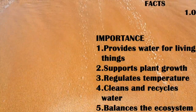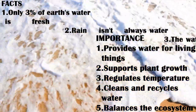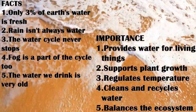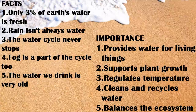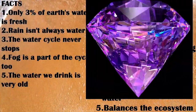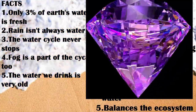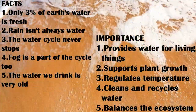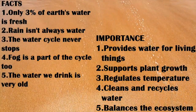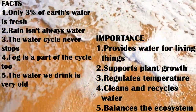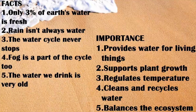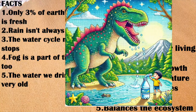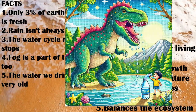Here are some fun facts about the water cycle. Only three percent of water on earth is fresh — the remaining is salty ocean water. On earth rain is water, but on other planets rain may be in different forms: Venus has sulfuric acid rain, and Uranus and Neptune have diamond rain! The water cycle never stops. Fog is also part of the cycle — it happens when water vapor condenses close to the ground. The water we drink today is millions of years old, recycled again and again — it's the same water the dinosaurs drank!